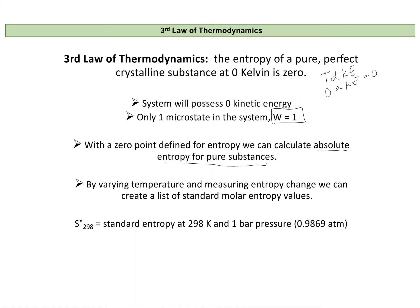That means we can work on this experimentally: we can vary temperature, measure entropy, and create a list of standard molar entropy values, much like was done for enthalpy. We represent this as S° with the temperature as a subscript. Standard entropy is at 298 Kelvin and one bar of pressure — very close to one atmosphere, but not quite; it's 0.9869 atmospheres instead.